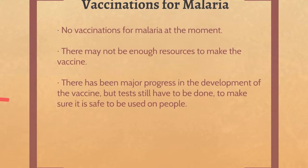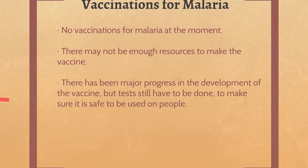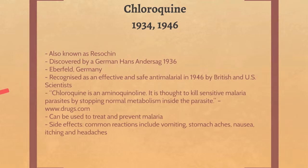There are no vaccinations for malaria currently. While a vaccine is possible to make, there are concerns that limited resources are available. Over the past few years there have been many significant developments in vaccinations; however, it is still being tested for potential risks. Chloroquine was discovered in 1936 by Hans Andersarg, and in 1946 it was found to be a safe and effective anti-malarial still used today. It works by altering and disarming malaria parasites, hence killing them, and can be used for both the treatment and prevention of malaria.